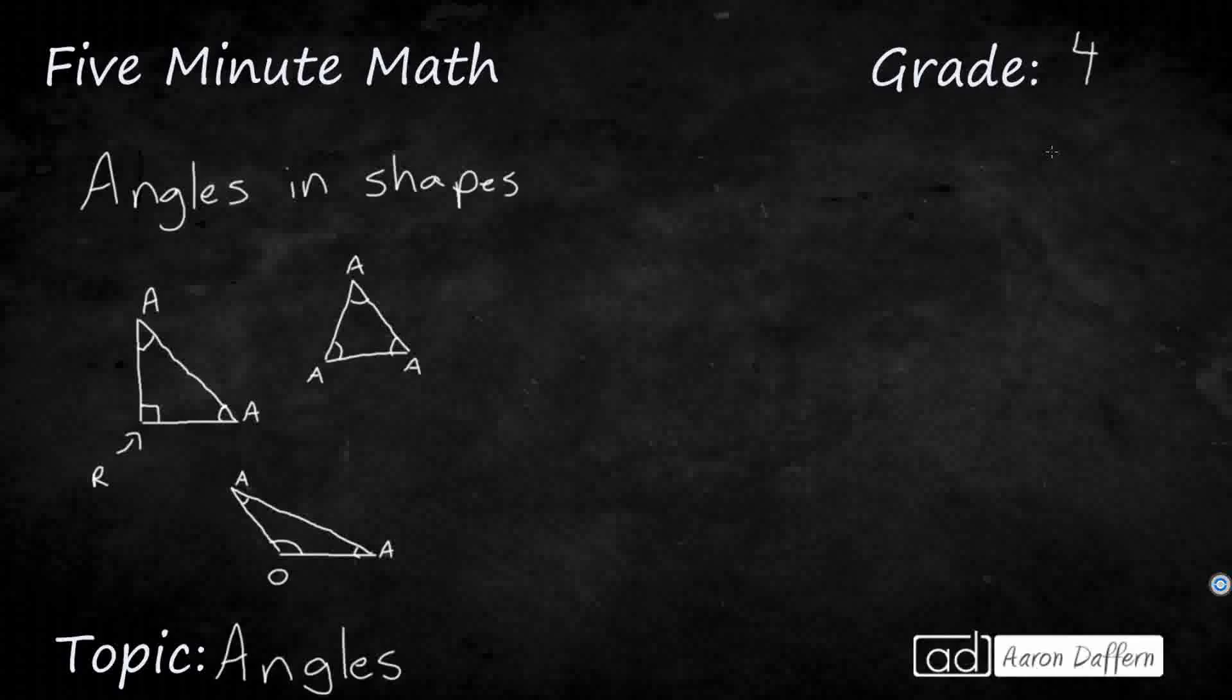Let's look at quadrilaterals. Well, most of us are familiar with a square and a rectangle. Those are pretty distinct, and we recognize them because they each have four right angles.